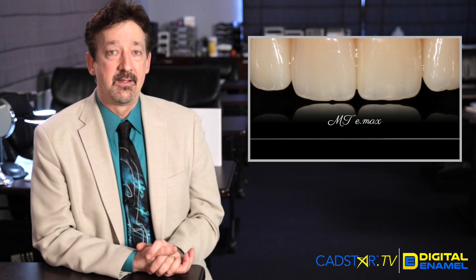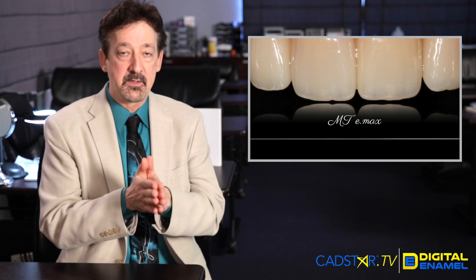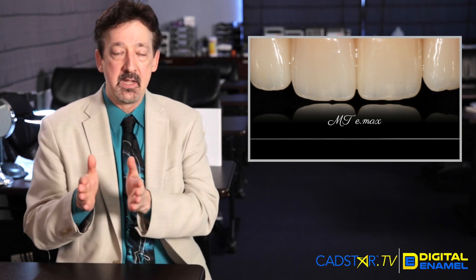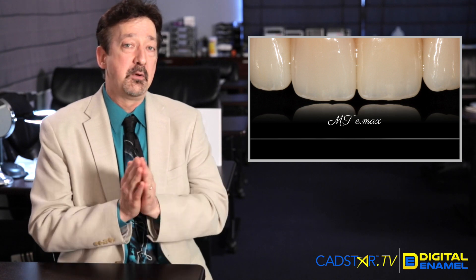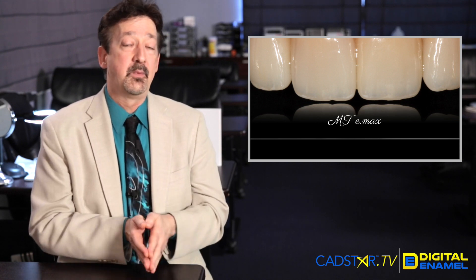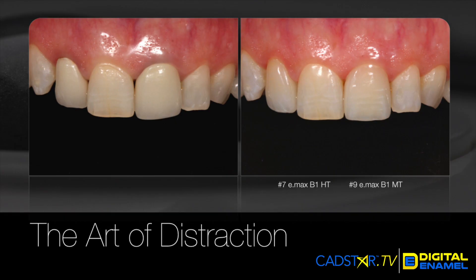You now have MT. MT is the opacity of a ceramic between HT, which is high transparency, and low transparency, which is LT. I really like the new MT ceramics — I'm finding that I'm using pretty close to the shade that it says on the block.